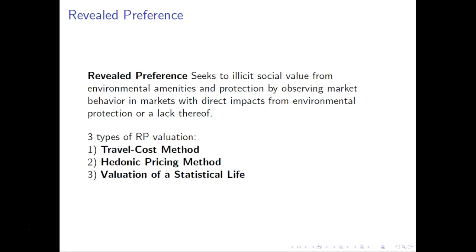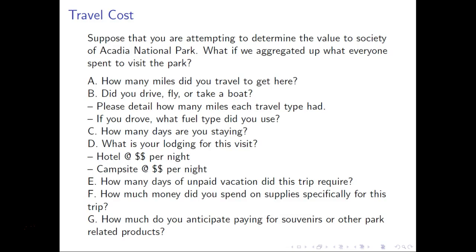While there are many types of revealed preference methods, there are three important types we will discuss in this video. The first is the travel cost method. The travel cost method asks individuals who are visiting, say, a park, various questions about how much they paid to visit that particular park. For example, if I were to ask individuals visiting Acadia National Park, I might ask: how many miles did it take you to get here? Did you drive, fly, or take a boat? How many days are you staying? Are you staying in a hotel or a campsite? How many days of unpaid work did you give up in order to take this trip? What we're attempting to do is ask someone basically how much did you pay to visit Acadia National Park — in other words, what was your revealed willingness to pay for this particular environmental amenity.